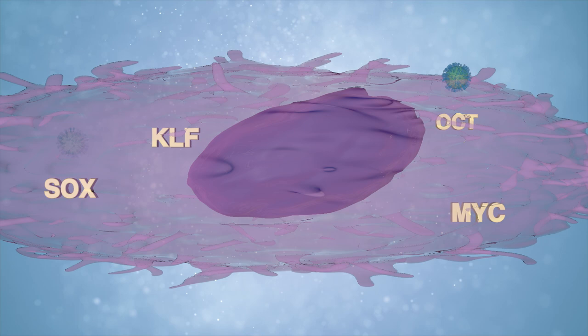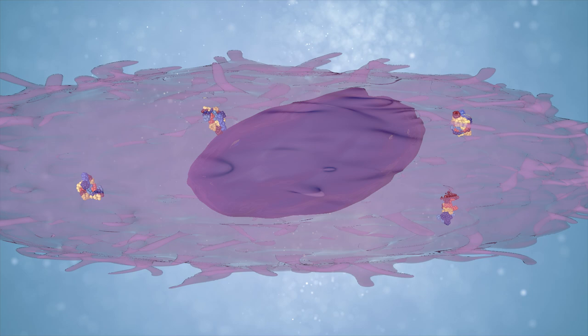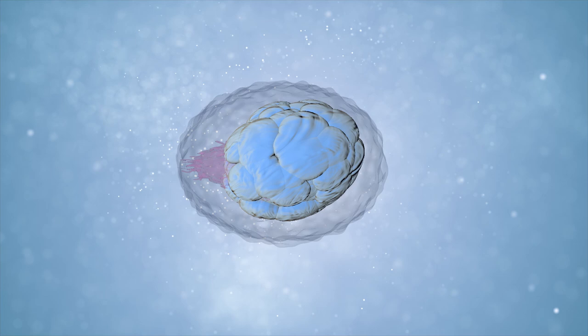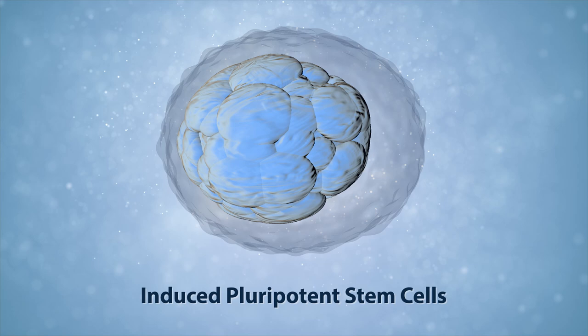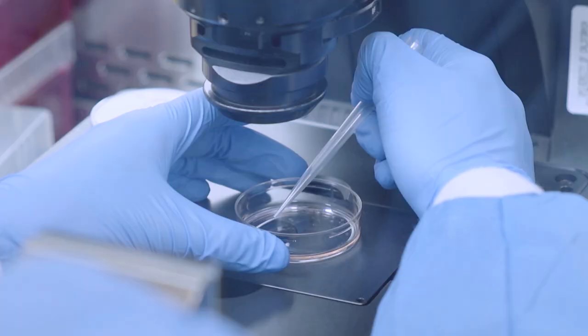The genes cause the cells to produce specific proteins. These proteins enter the nucleus and act on the cell's DNA. This causes the cell's DNA to convert the cells into pluripotent stem cells. These are called induced pluripotent stem cells, or iPSCs.